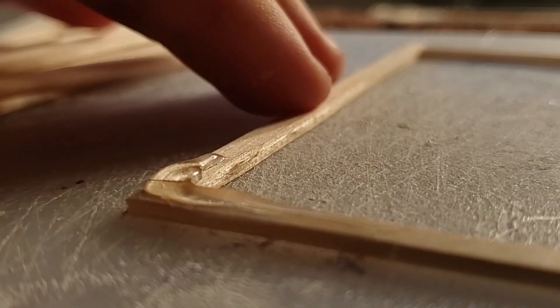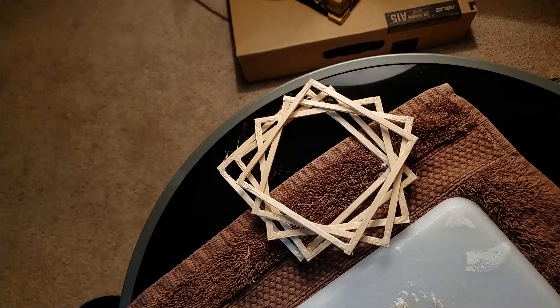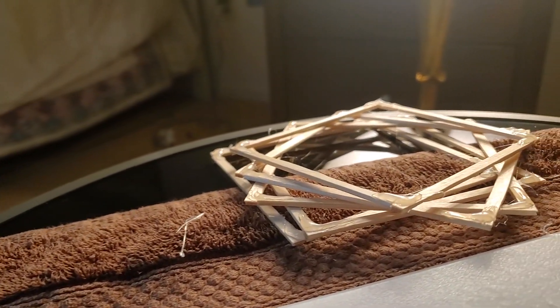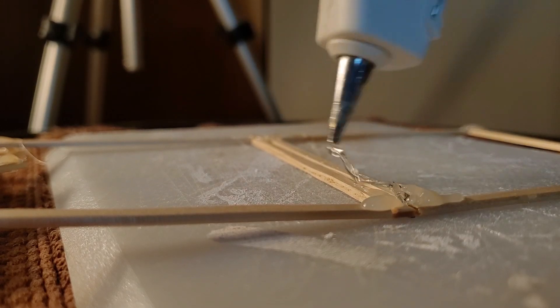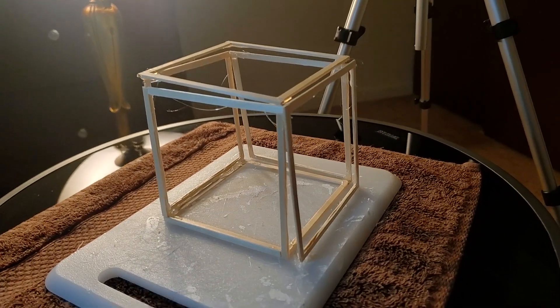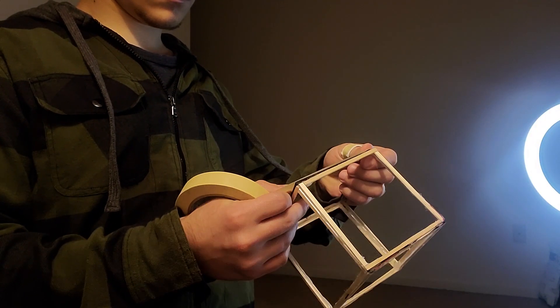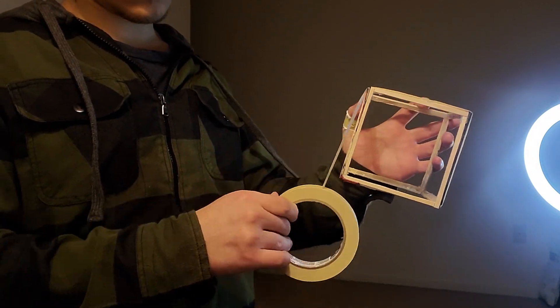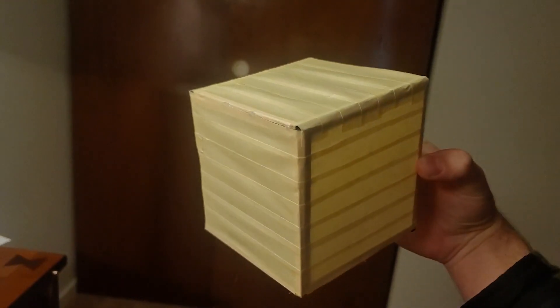You can see me gluing these ice cream sticks together in a frame, which I keep doing until we get six of those. Now we glue them together to make the framework for the lamp and cover all of it with tape until it looks like it was made in China.